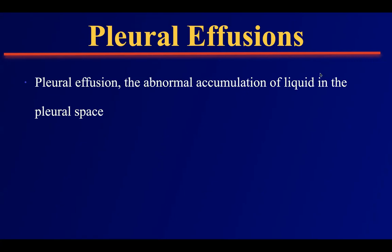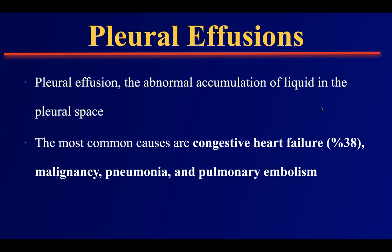When we talk about pleural effusion, we mean abnormal accumulation of liquid in the pleural space, because at any time a person has approximately 15 to 50 milliliters of pleural fluid normally. The most common causes are congestive heart failure — approximately one-third of patients — malignancy, pneumonia, and pulmonary embolism. You have to remember at least these four possible causes of pleural effusions.